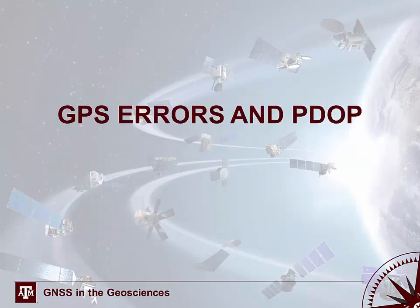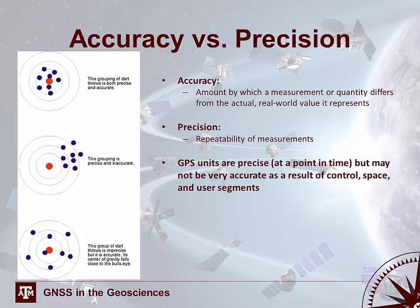A quick reminder on accuracy versus precision: accuracy is the amount by which a measurement differs from the actual real-world value it represents. Precision is simply the repeatability of measurements — how tightly grouped they are. It could be argued that GPS units are precise at a point in time, but may not be very accurate at that same point, as a result of the control, space, and user segments interacting and errors distributed throughout those three segments.